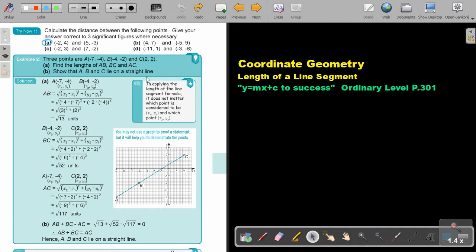And then the next one, show that ABC lies on a straight line. So ABC is on a straight line. The reason why, if you take square root 13 and you add square root 52 and you subtract. So let's just see.